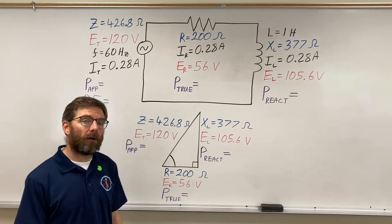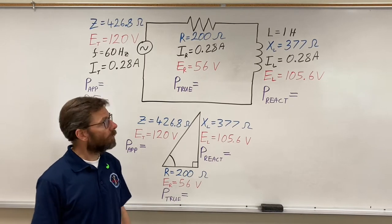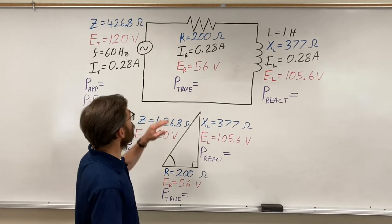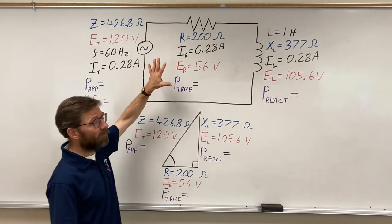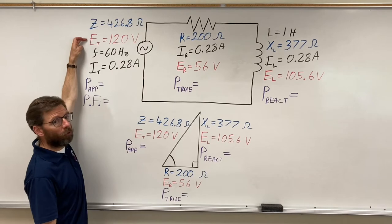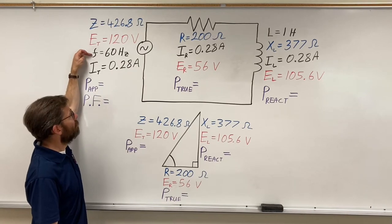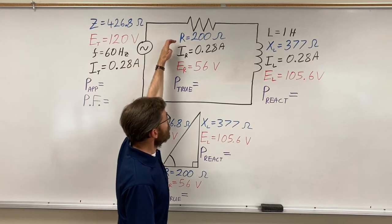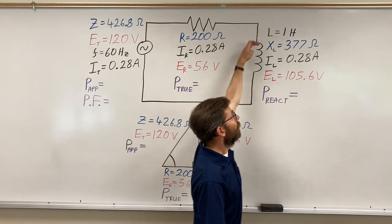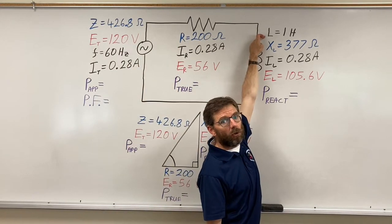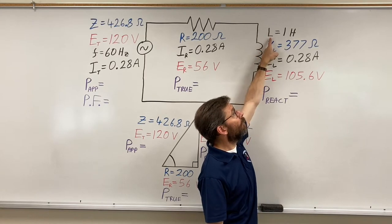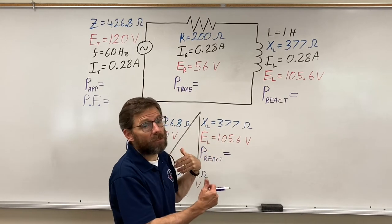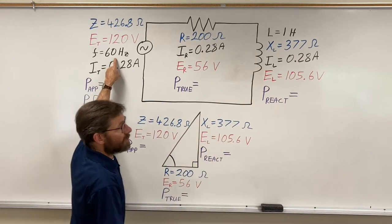We're back to talk about power. Let's review quickly what we did earlier. We started off with a circuit with 120 volts applied to it, a frequency of 60 Hertz, a resistor of 200 ohms, and an inductor with an inductance L of one henry.